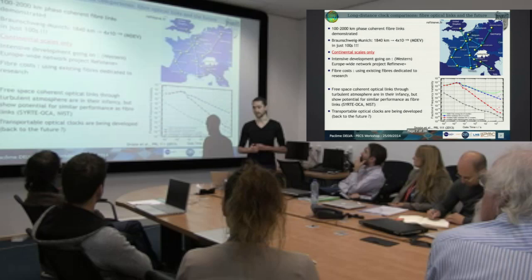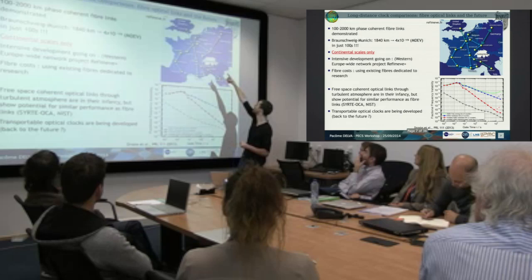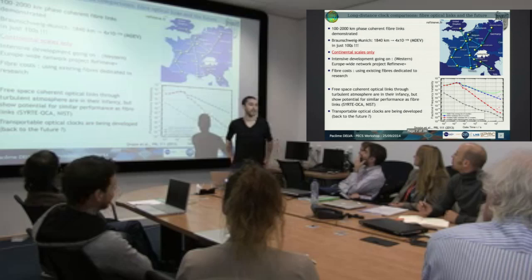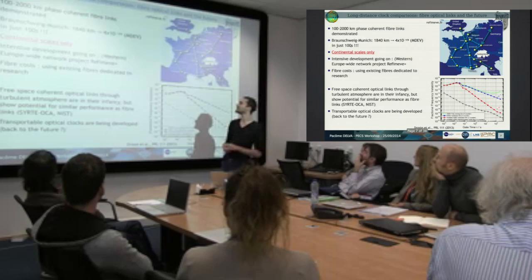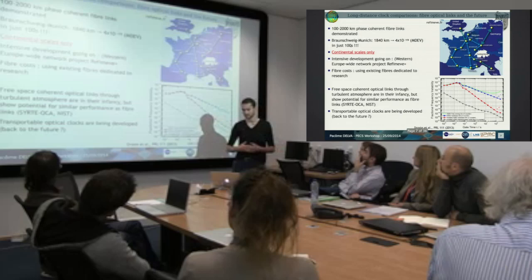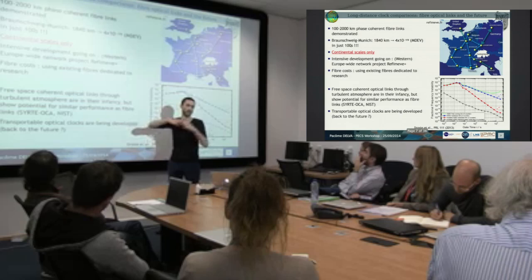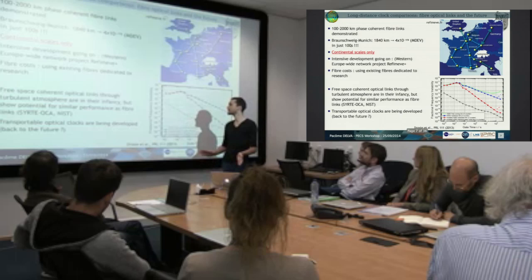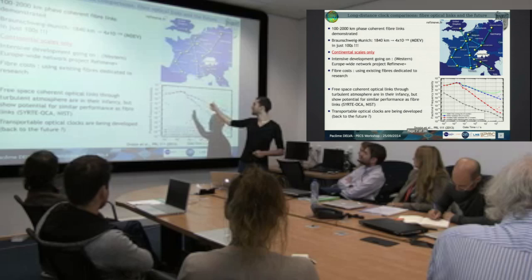A very promising new technique is the phase-coherent fiber optical link, demonstrated over 100 to 2000 kilometers and deployable on continental scales — though not intercontinental. There is intensive development ongoing. For example, the French project Refimeve aims to connect labs across France, the UK, Germany, and Italy with fiber links. With fiber links you can achieve 10⁻¹⁹ in just 100 seconds — sufficient to compare optical clocks. There are also some early-stage projects for coherent optical links in free air, but not yet at these accuracy levels.